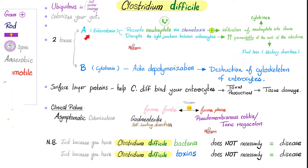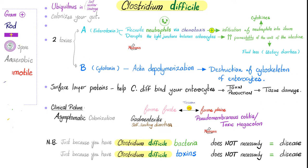Are these the only virulence factors? No, not by any stretch of the imagination. We also have surface layer proteins that help Clostridium difficile bind to your enterocytes and facilitate toxin production — meaning Toxin A and Toxin B — which can lead to tissue damage.